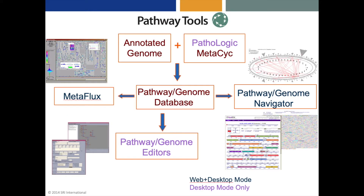Here's an overview of the main components of Pathway Tools and how they work together. One first imports an annotated genome into the Pathway Tools environment in the form of a GenBank file or GFF file. The Pathologic component creates a new pathway genome database that combines the annotated genome with inferred information such as a metabolic reconstruction for the organism. The Pathway Genome editors can be used to interactively update that database. The Pathway Genome Navigator enables the user to search and navigate this pathway genome information space as well as to perform omics data analyses. And the Metaflux component lets one build a quantitative metabolic flux model using flux balance analysis from a pathway genome database.